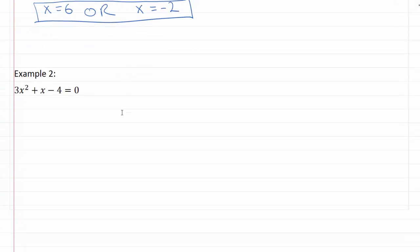Now looking at example two, this one is a little bit trickier because I've got a coefficient in front of my x squared. It could be a little bit harder to factor. I've got three x squared plus x minus four equals zero. So I know right here that I want to have my three x and my x, and I'm going to need to have four and a one.